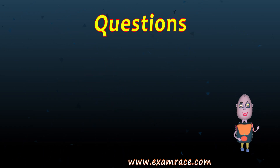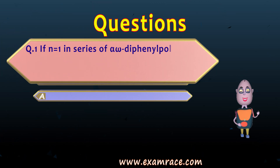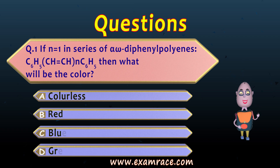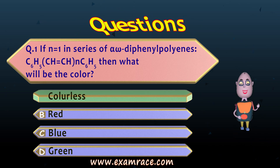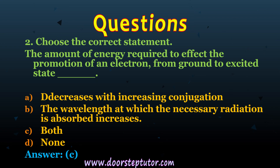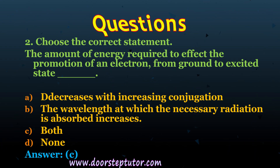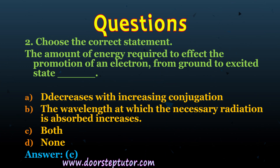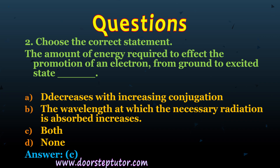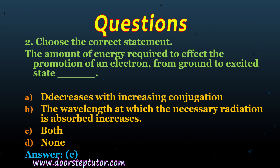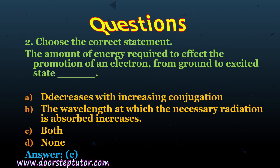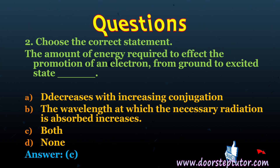For the MCQs: if n = 1 in a diphenyl polyene series, the compound is colorless. The correct statements are both: (a) the amount of energy required to promote an electron from ground to excited state decreases with increasing conjugation, and (b) the wavelength at which radiation is absorbed increases — so the answer is (c) both A and B are correct.